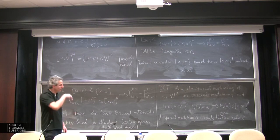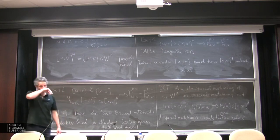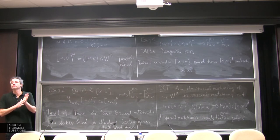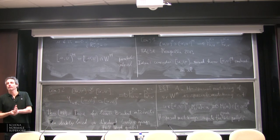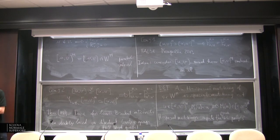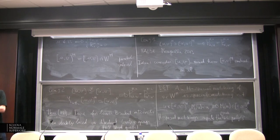Are there any questions? It's really just a comment: you mentioned the classical combinatorial invariance conjecture is true for Boolean algebras — it's actually true for any lattice. Okay, so let's just note that.